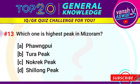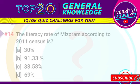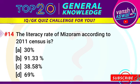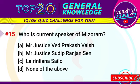Question number 13: which is the highest peak in Mizoram? The correct answer is Phong Pui, which is also known as the Blue Mountain. Question number 14: the literacy rate of Mizoram according to the 2011 census is? The right answer is 91.33 percent.